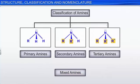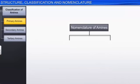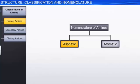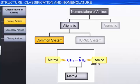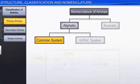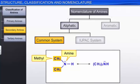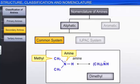Let us now look at the nomenclature of aliphatic amines. In the common system, an aliphatic amine is named by prefixing the alkyl group to the amine. For example, the compound shown here is named as methyl amine by prefixing the methyl group to the amine. In secondary amines, if the two alkyl groups are the same, then the prefix di- is added before the name of the alkyl group. Hence, the given compound is named dimethyl amine.